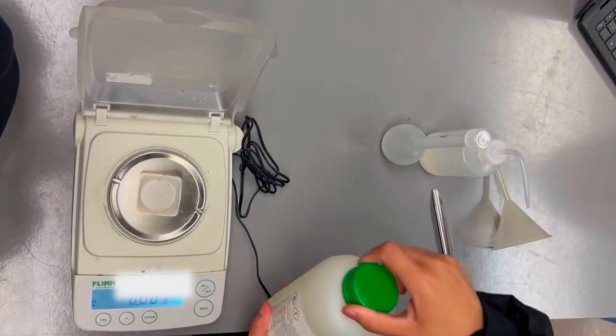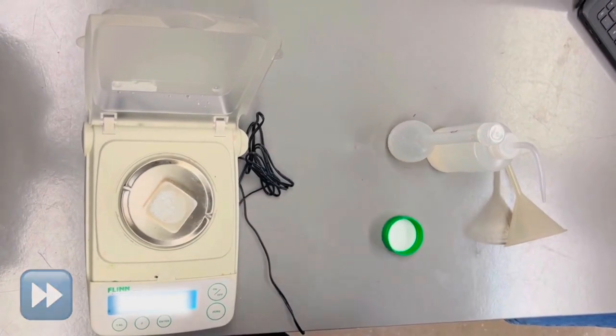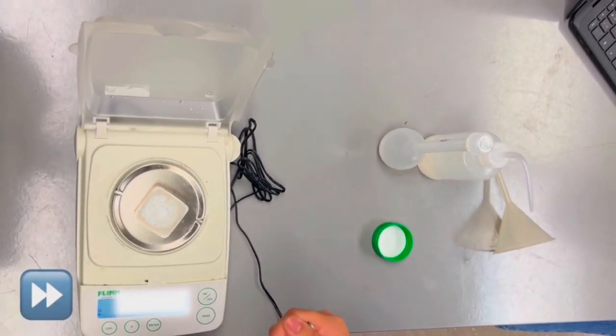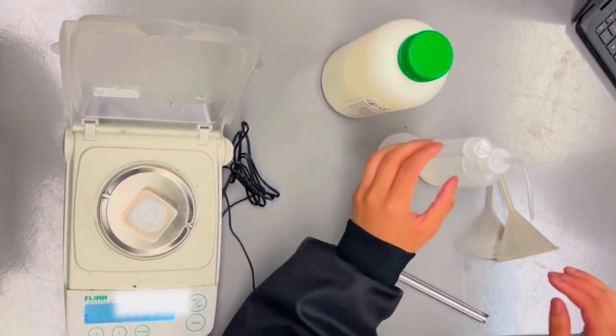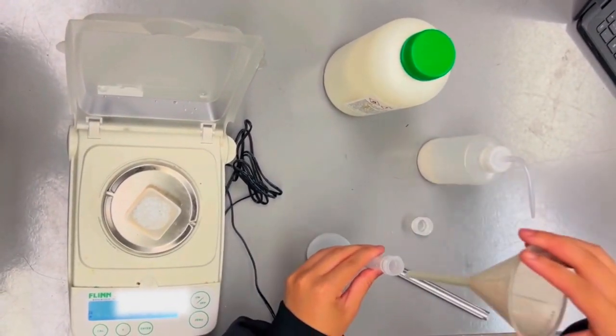You will need to make three solutions for this lab. Transfer the solid onto the weight boat using the spatula. Once you have the correct mass, insert a funnel into your 100 milliliter volumetric flask and transfer the solids into the container.